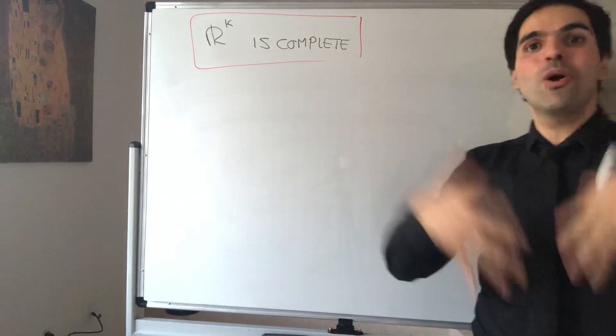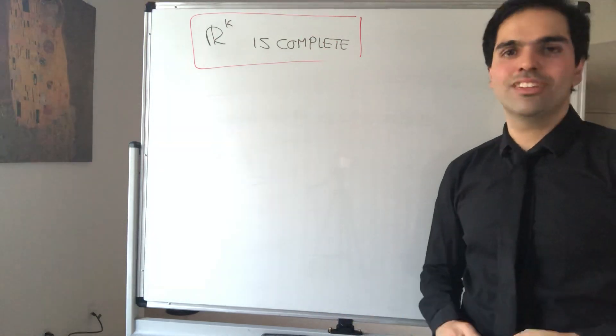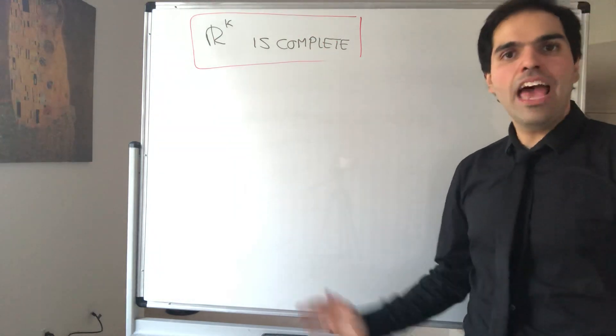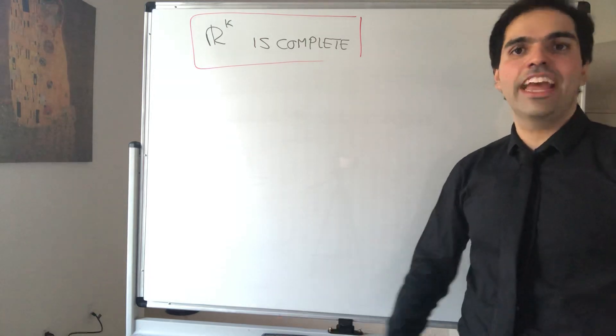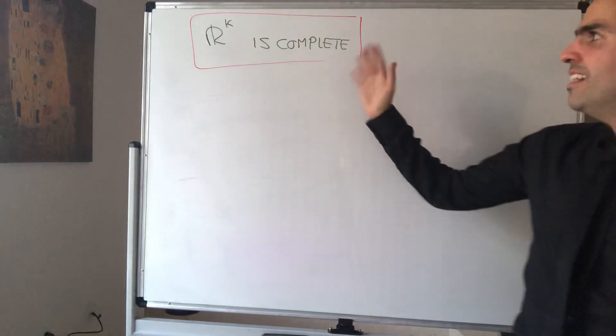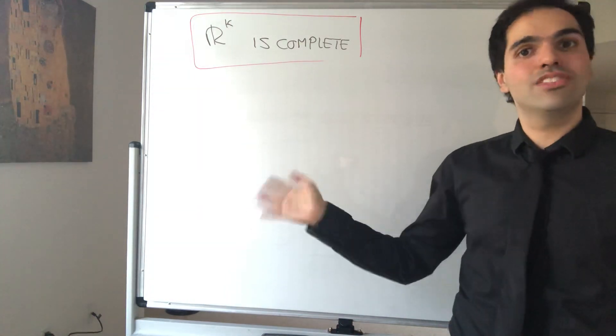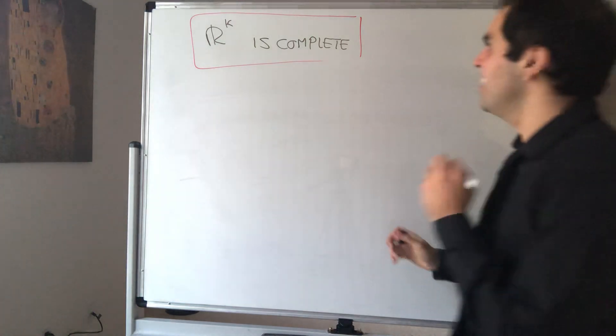Thanks for watching. Today to complete our adventure of R^K, I will show you that R^K is complete, namely that every Cauchy sequence in R^K converges. In other words, it doesn't have any holes. The good news is we've already done the hard work, so the rest is just a matter of putting everything together.